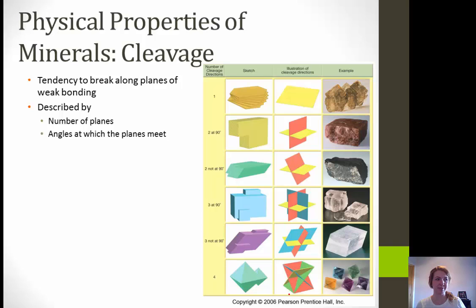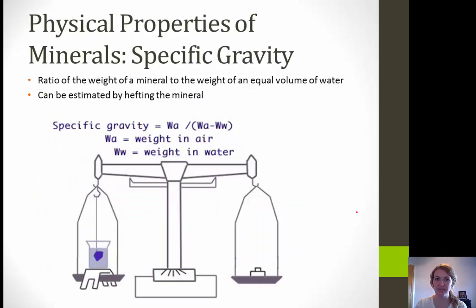Next we're going to talk about cleavage — the tendency to break along planes of weak bonding. This is typically described by the number of planes and the angles at which those planes meet. If a mineral breaks in more than one direction, you describe the number of directions and the angles. This chart shows the number of cleavage directions, a schematic, and an actual example.